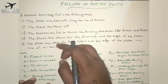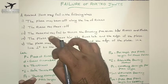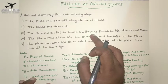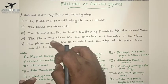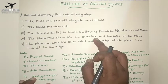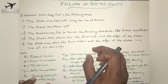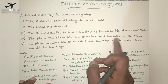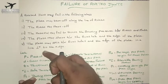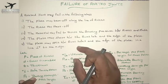The first type is the plate may tear off along the line of rivet — that is called tension failure. The second is the rivet may shear off — that is called shear failure. The third is the material may fail to resist the bearing pressure between rivet and plate — that is called bearing failure. The fourth is the plate may shear between the rivet hole and edge of the plate. The fifth is the plate may split between the rivet hole and the edge of the plate in a line perpendicular to the edge. You will understand these better by seeing the diagrams.